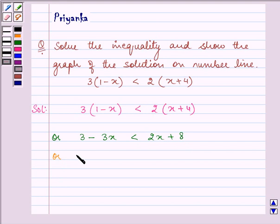Now let us subtract 3 from both the sides. On doing so we have 3 minus 3x minus 3 is less than 2x plus 8 minus 3.